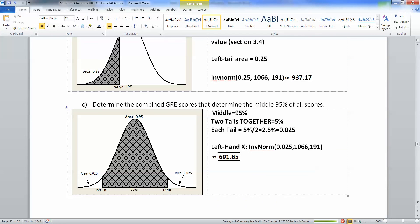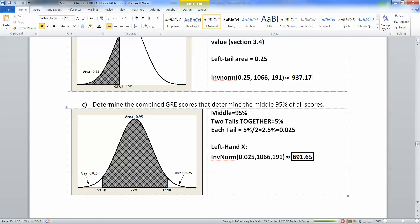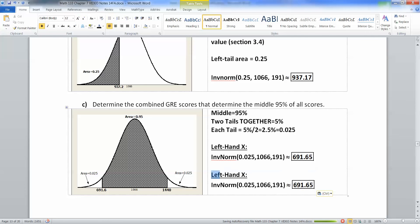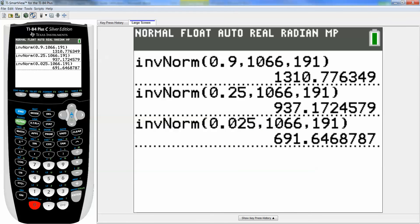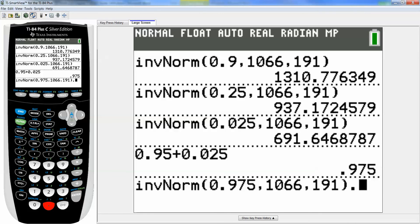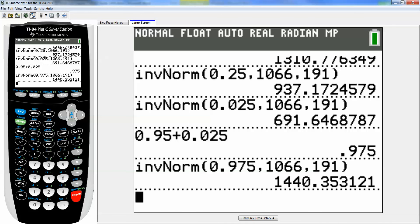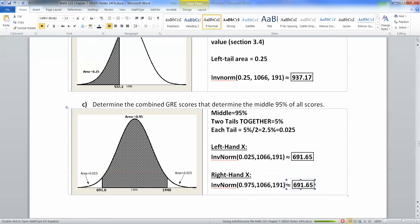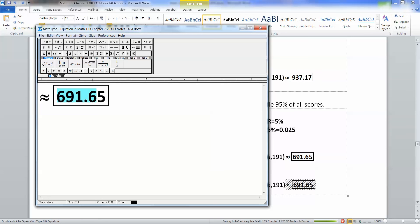All right. So there's that one. Now for the right-hand one, I've got to do a little bit more work here. So the right-hand one, the area to the left of it is all this gray region plus that white tail over there. So that would be 0.975 is my area because it's 95 and 0.025 put together. So this would be right. Okay. So this would be 0.975. And again, the 97 comes from 0.025 plus 0.95. So the gray region plus the white tail together, let me show you, 0.95 plus 0.025 makes 0.975. So I want second inverse number 3, 0.975, 1066, 191. Enter. And I get 1440.35.